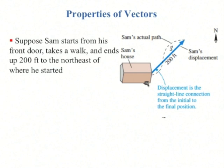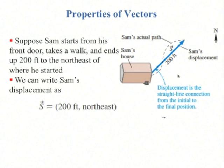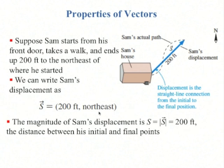So an example: suppose Sam starts from his front door, takes a walk, and ends up 200 feet to the northeast of where he started. If you take his final position minus his initial position, that's called his displacement vector, which would be written as the magnitude, comma, the direction: 200 feet, comma, northeast.